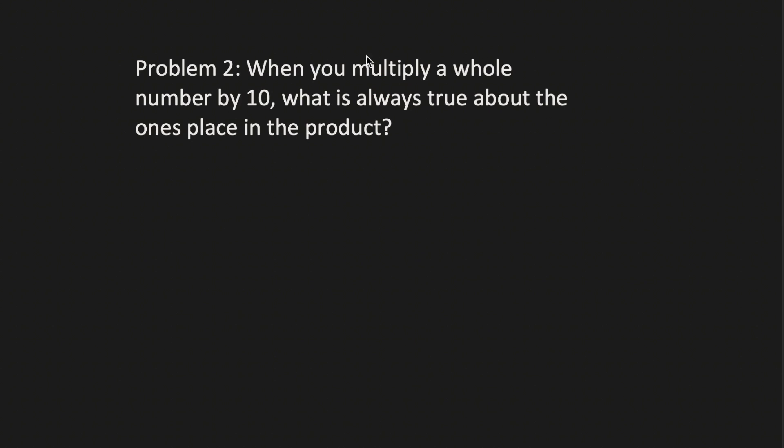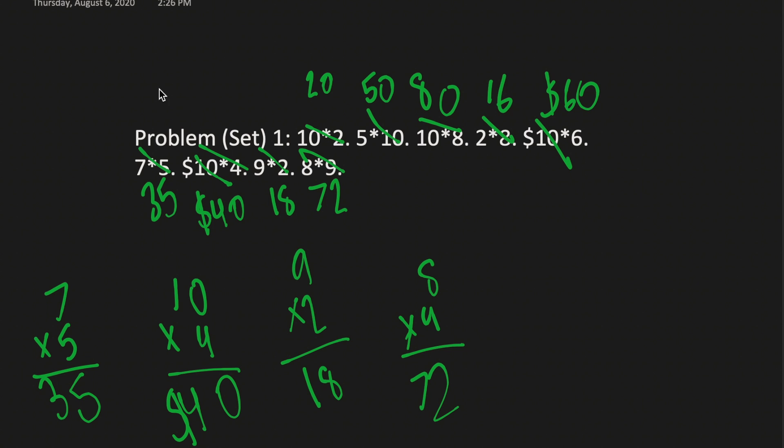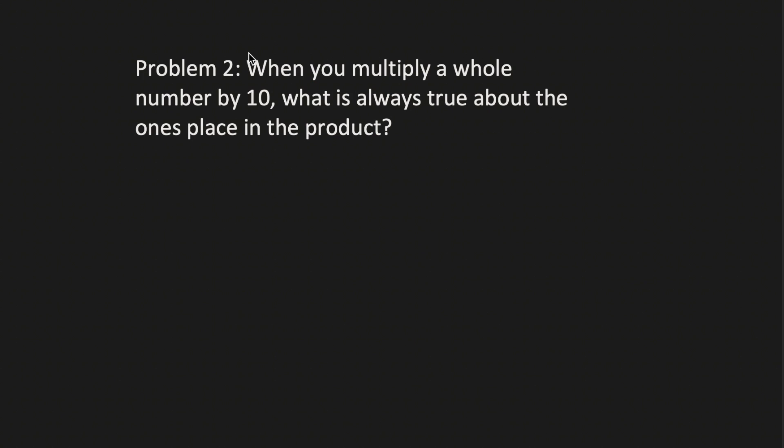Problem 2. When you multiply a whole number by 10, what is always true about the 1's place in the product? Let's take a look. When we did 10 times 2, the 1's place ended with a 0. When we did 5 times 10, the 1's place ended with a 0. Same goes for 10 times 8, 10 times 6, and 10 times 4. So the answer would be when you multiply a whole number by 10, the 1's place is always a 0.